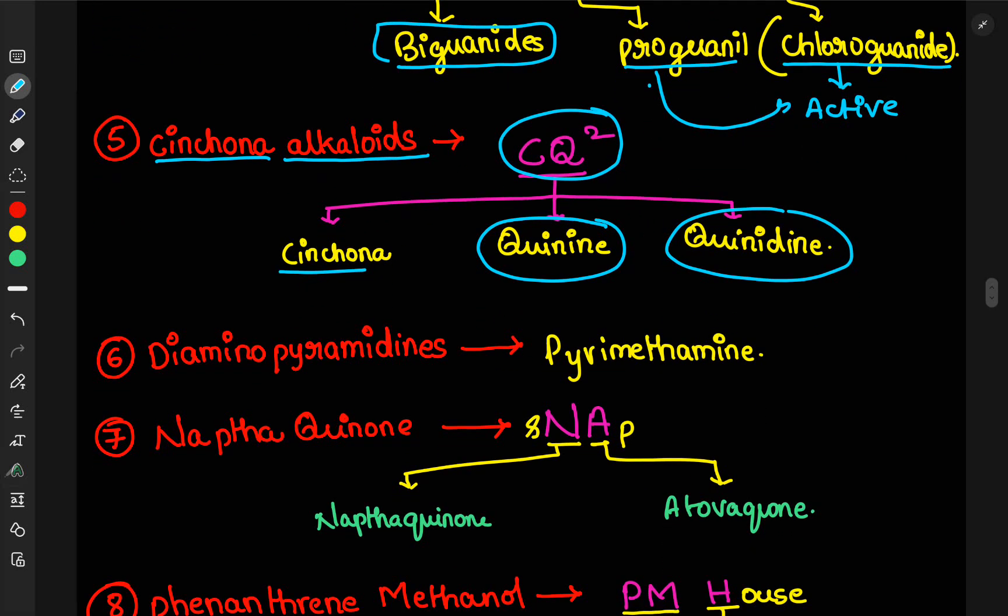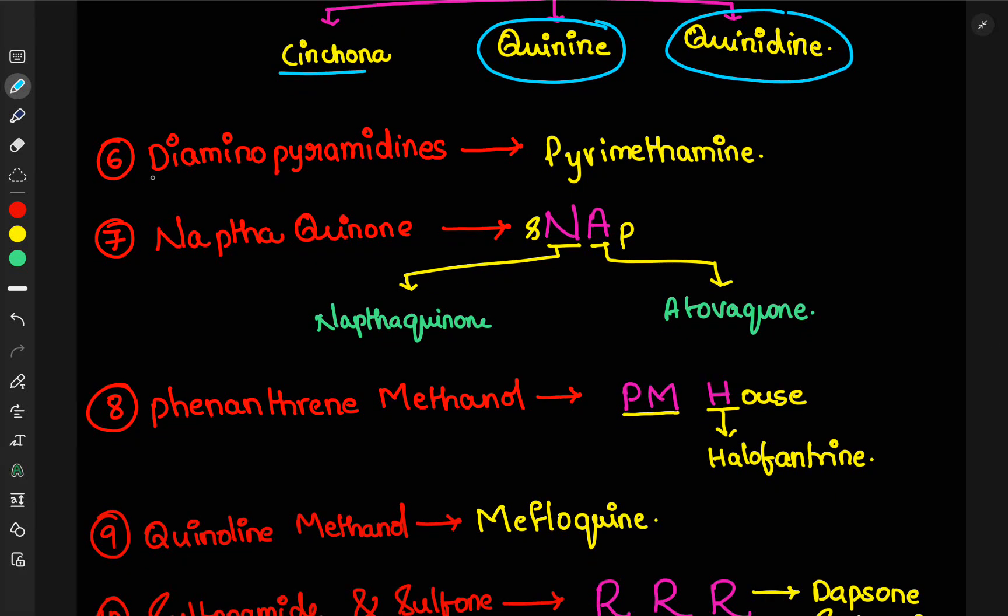First, cinchona alkaloids. Then, the sixth one, diaminopyrimidines. Here, it has only one example, pyrimethamine.